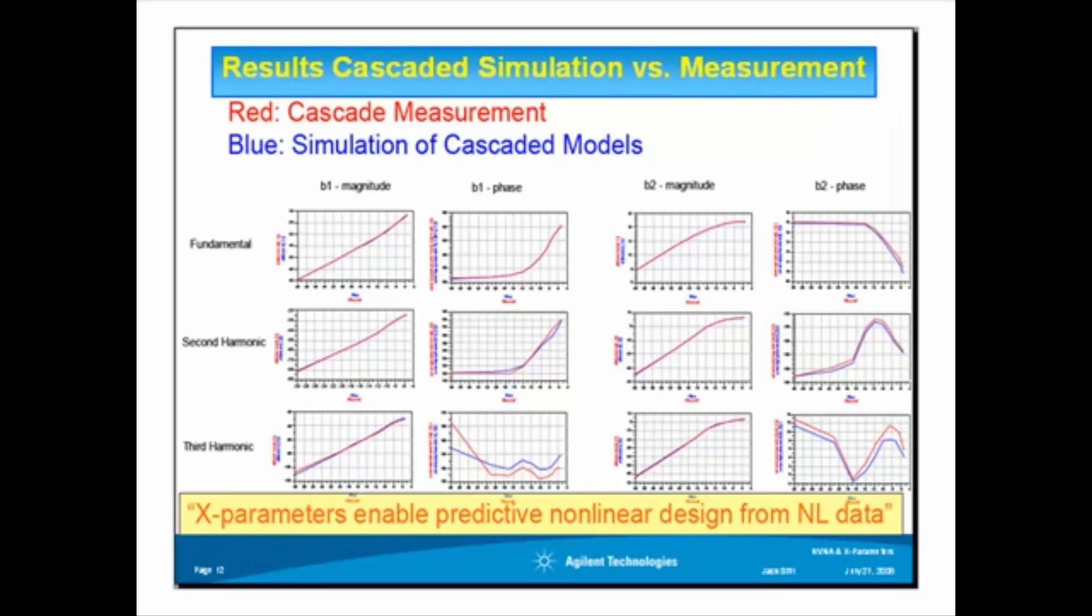So we can compare the measurement of the cascade versus the simulation in ADS of the cascaded structure. This slide shows the simulation versus measured results of the cascaded amplifiers at the fundamental frequency, the second harmonic, and the third harmonic. You can see it is very clear that the X-parameters method completes the puzzle and generates highly accurate nonlinear models of components under large drive and mismatch.